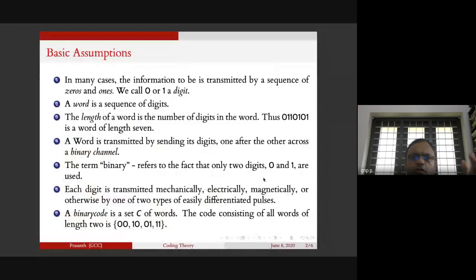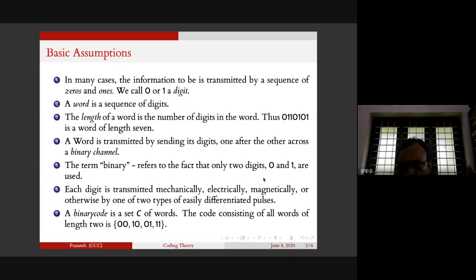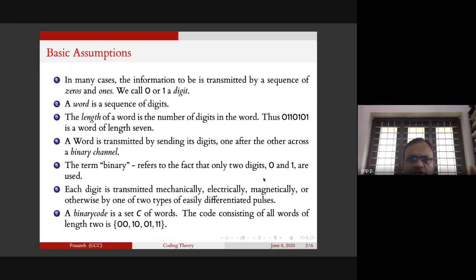The basic assumptions: the information to be transmitted is a sequence of zeros and ones. We call zero or one a digit. A word is a sequence of digits - a sequence of zeros and ones. The length of the word is the number of digits in the word. For example, if you take 0110101, it is a word that contains seven digits, so its length is seven.